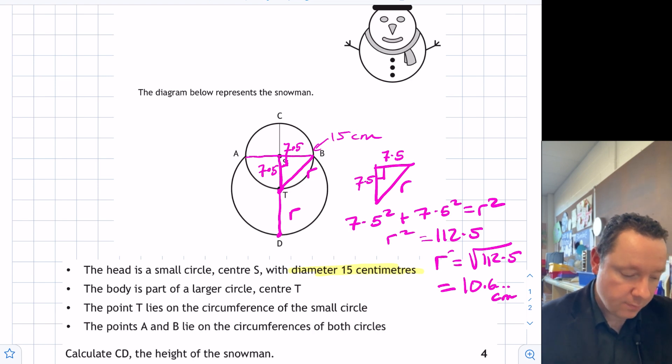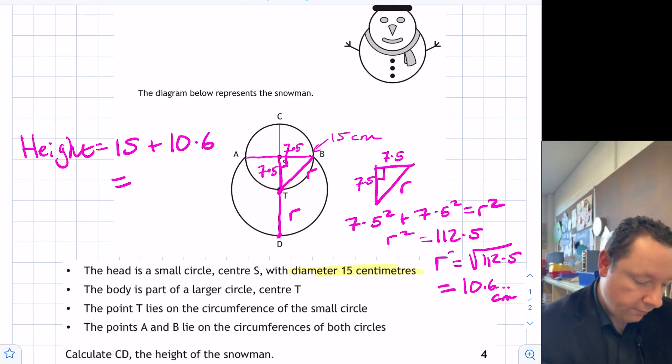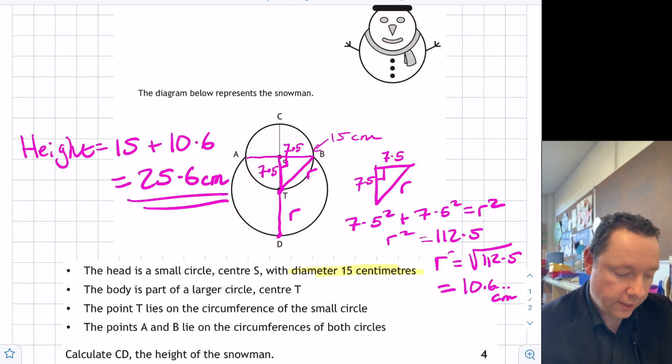So we now know that R is 10.6, so our height is equal to, well, we've got our diameter to here, which is 15, plus our radius that we've just calculated, 10.6. So in total, 25.6 centimeters to one decimal place.